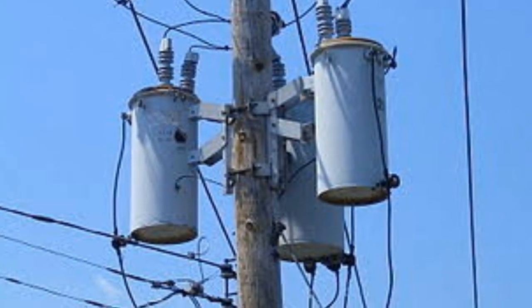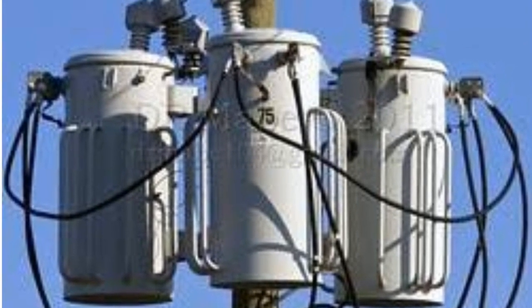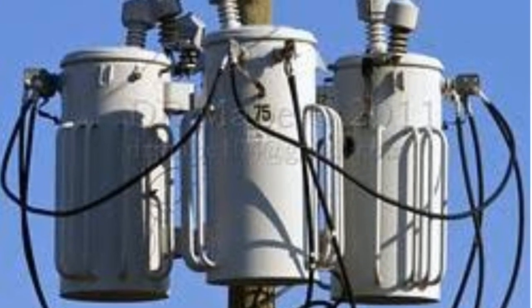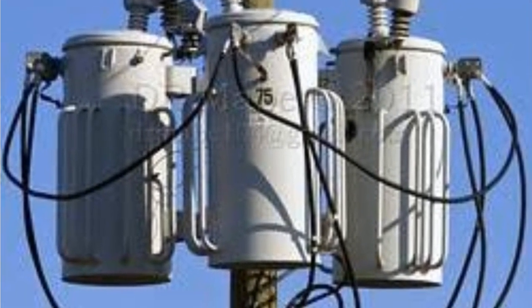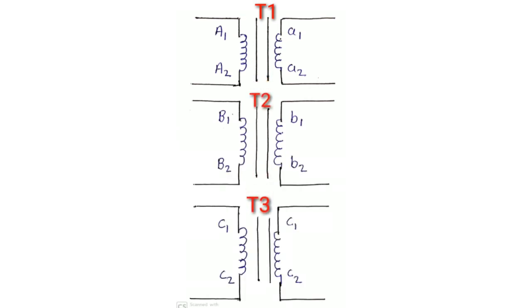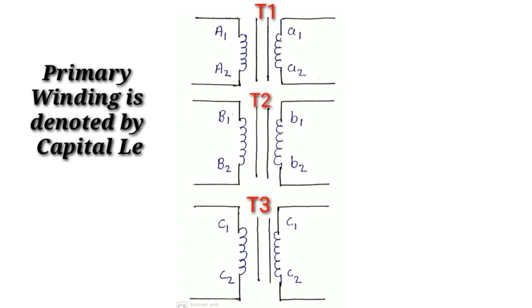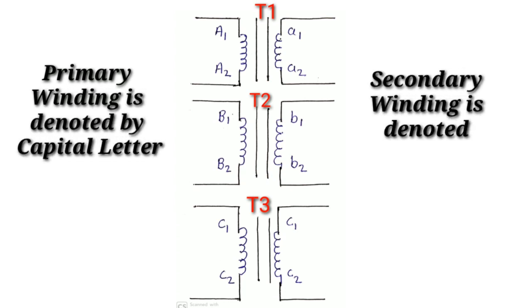Here we have three transformers: transformer T1, transformer T2, and transformer T3. In the transformer, the primary winding is denoted by capital letters and the secondary side by small letters.